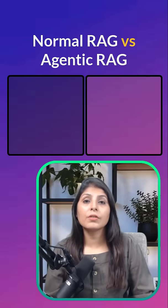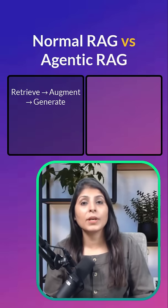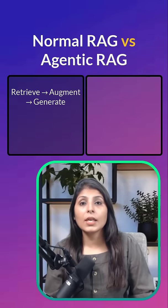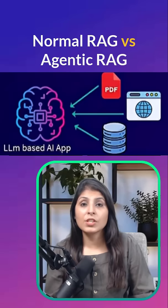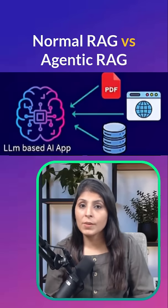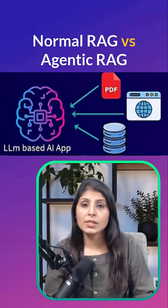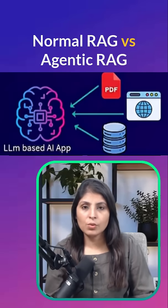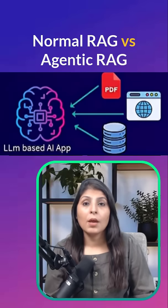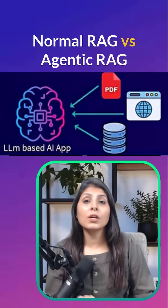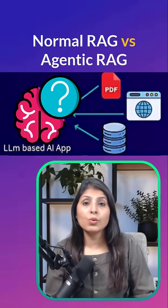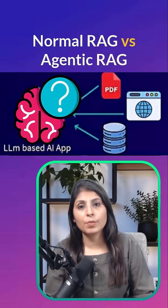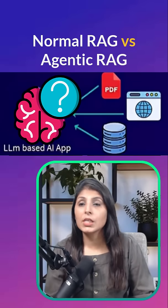Normal RAG follows the Retrieve Augment Generate pipeline. The AI model fetches information from external sources and uses it to answer the user's question. But it cannot decide what to search or how to process multiple sources.